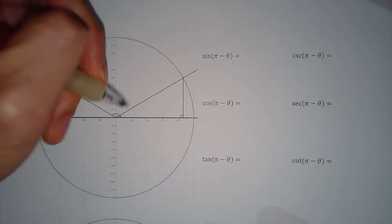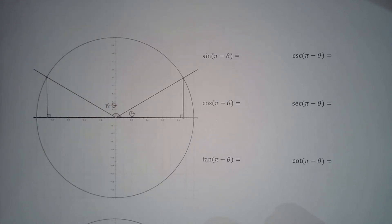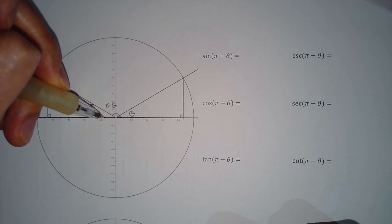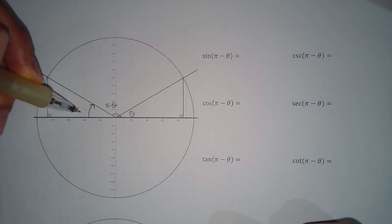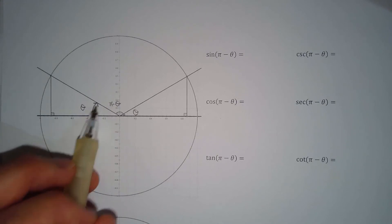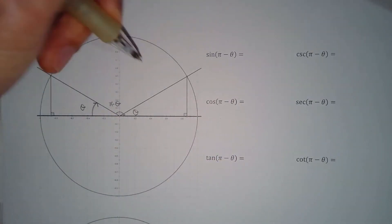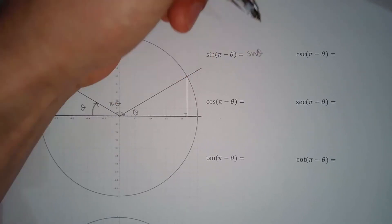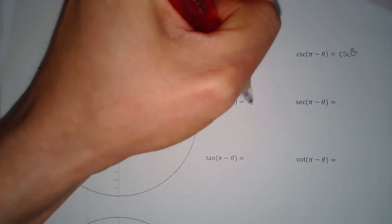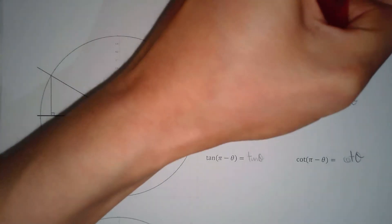Now working with theta and pi minus theta. The reference angle of pi minus theta is simply theta — not pi over two minus theta. So we do not switch to the complementary trig function. The results are sine theta, cosecant theta, cos theta, secant theta, tan theta, cotan theta. But be careful: pi minus theta is in the second quadrant where only sine is positive, so cosine, secant, tangent, and cotangent all get a negative sign.